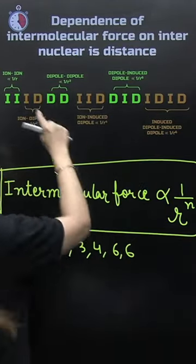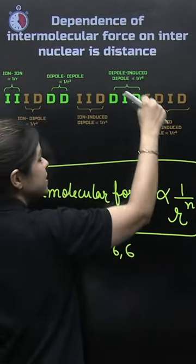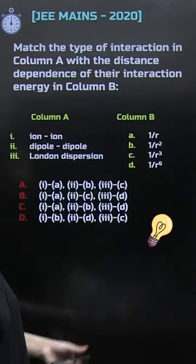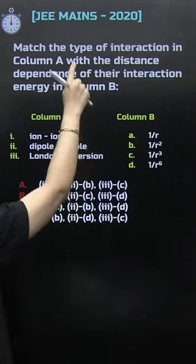Now, look at R's power: 1, 2, 3, 4, 6, 6 for the sets respectively. Now, we have a question from JEE Mains, the 2020 question in which you have to match the column.